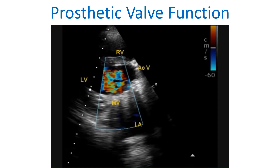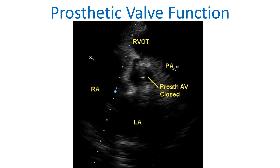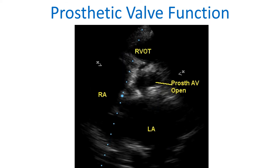AOV: aortic valve. Prosthetic aortic valve in the closed position, seen from the parasternal short axis view. PA: pulmonary artery; RVOT: right ventricular outflow tract. In this view also, the left atrium appears dilated. A parasternal short axis view frame shows the prosthetic aortic valve in the open position with a good orifice. The shadows in the upper and lower parts of the aorta in cross-section are probably the sewing ring of the prosthetic valve.